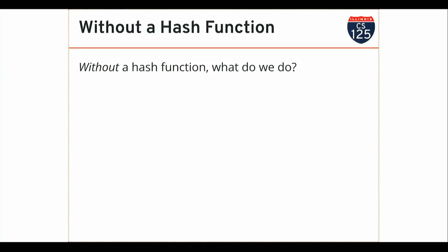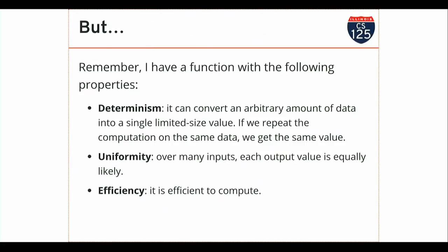Without a hash function, you'd either have to send me the latest file again, or we'd have to manually verify that the two files are the same. But I have this magic function that is deterministic — meaning every time you run it on the same contents you get the same result. That also means that if you change the file, you should get a different hash. If you get the same hash for every file, it's not a very good hash function, because it's not distributing its output over many different inputs.